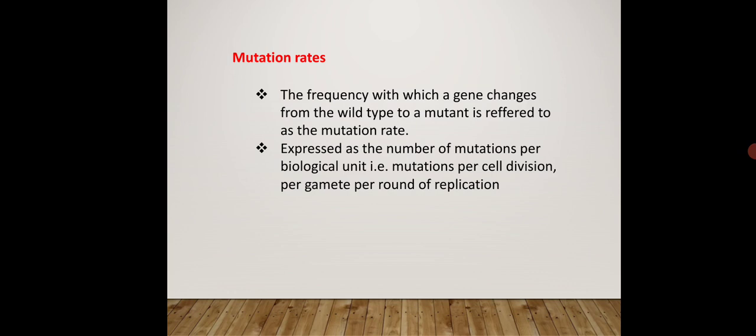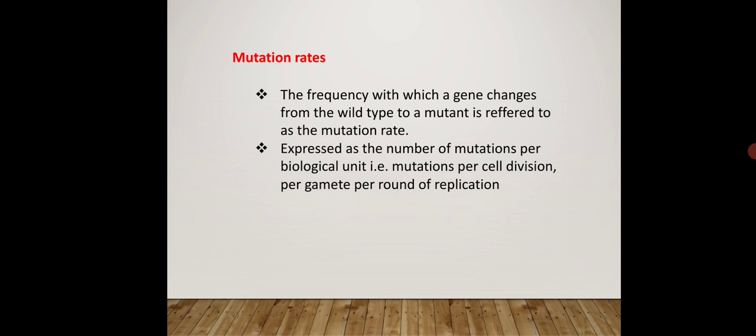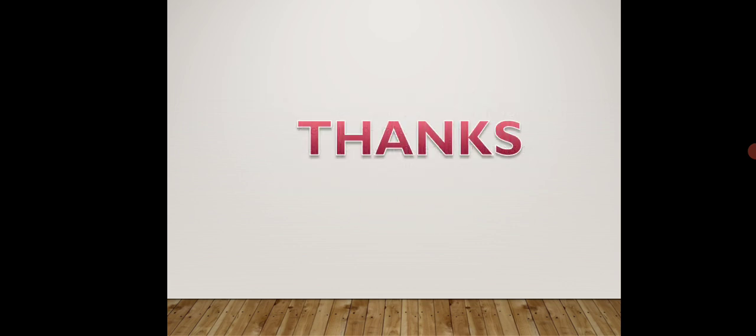In every cell division, how many mutations have been caused — that is the meaning of mutation rate. It is counted per cell division, per gamete, and per round of replication. Every time replication occurs, every time a cell divides, every time a gamete is formed, all these numbers are considered to count the mutation rate.